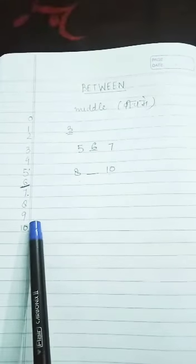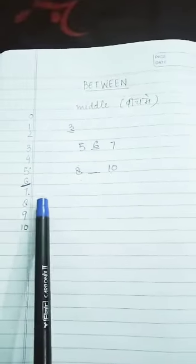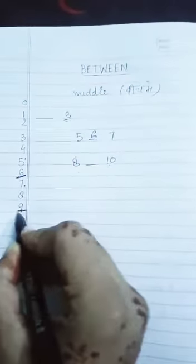What did we see, students? We saw that in between eight and nine, in between eight and ten, this is the number. That is nine.